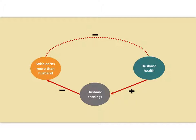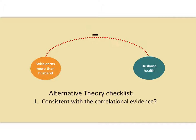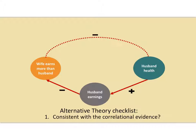Now we go to the checklist for this alternative theory. The first question is: does the alternative theory predict the actual evidence? We want to check that our theory is consistent with the evidence. Higher husband health means higher husband earnings, meaning it's less likely the wife earns more than the husband — a negative relationship. Or the other way: worse husband health, lower husband earnings, more likely wife earns more than husband — again a negative relationship. So the first item on our checklist is confirmed: the theory is consistent with the evidence. Check.